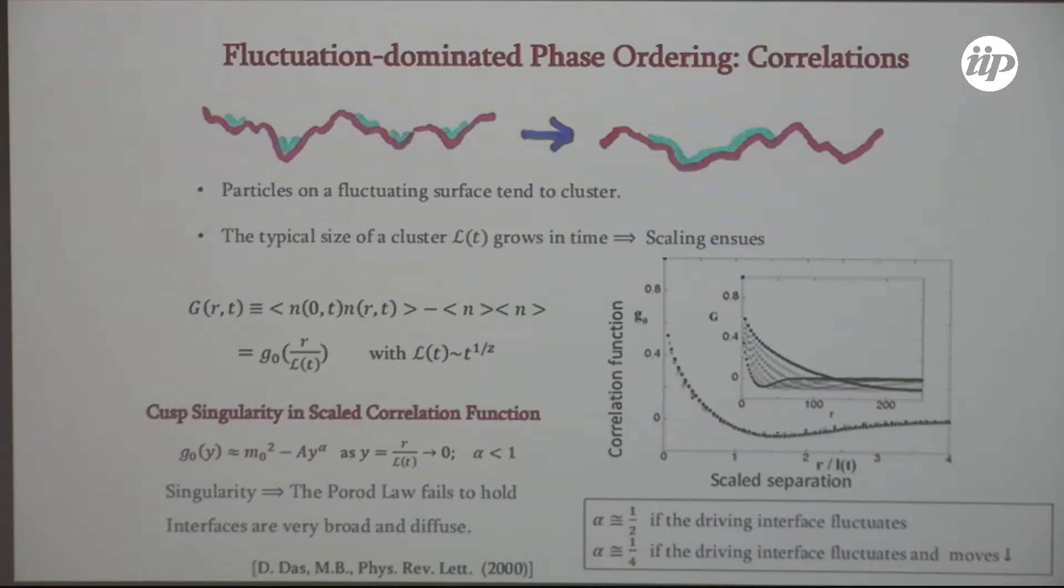And this sort of scaling works well. So you can see this data over many times collapsing onto a single curve here. But the surprise was, and is, that the curve itself has a singularity. And the singularity is a cusp singularity at the origin. So it's a scaling function. If you take the limit large R, large L, for fixed R by L, look at the function. And as R by L goes to zero in the scaling limit, this function actually is singular.